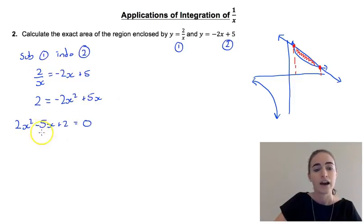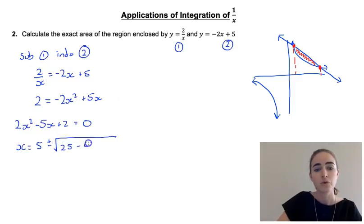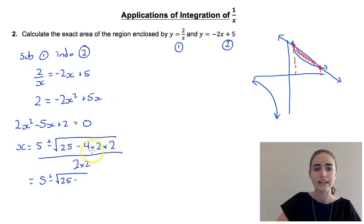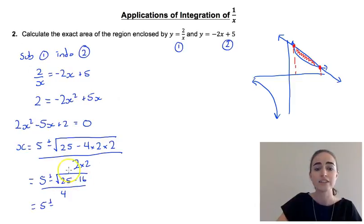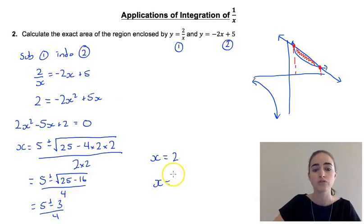Bringing everything to the left-hand side gives 2x squared minus 5x plus 2 equals 0. Now we need to solve this quadratic using the quadratic formula. So x equals minus b — that's minus minus 5 which gives positive 5 — plus or minus the square root of b squared, so minus 5 squared is 25, minus 4 times a which is 2 times c which is 2, all over 2a which is 4. Simplifying: 5 plus or minus the square root of 25 minus 16, which is 9, and the square root of 9 is 3, giving 5 plus or minus 3 over 4. So x equals 8 over 4 which is 2, or 5 minus 3 is 2 and 2 over 4 is one half.